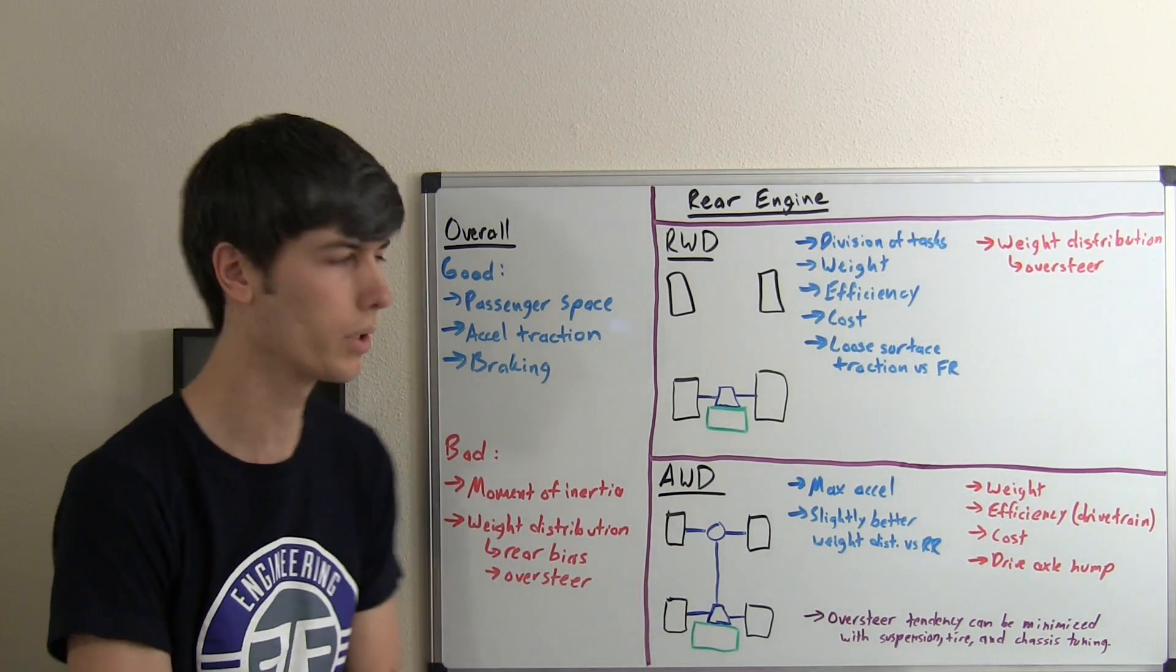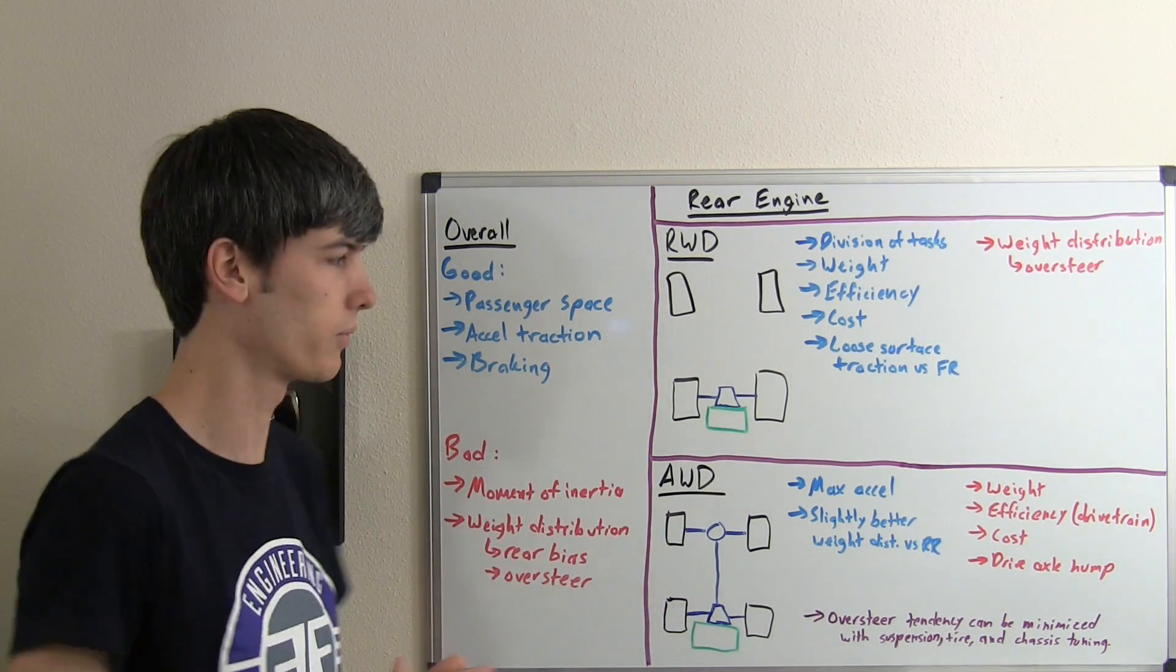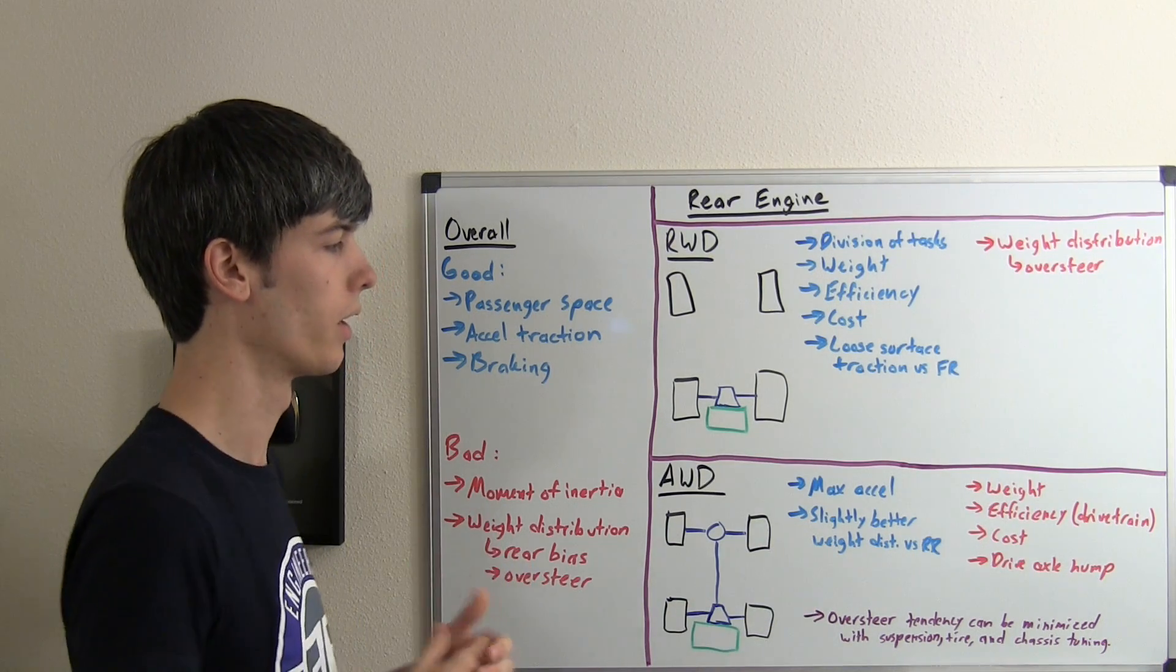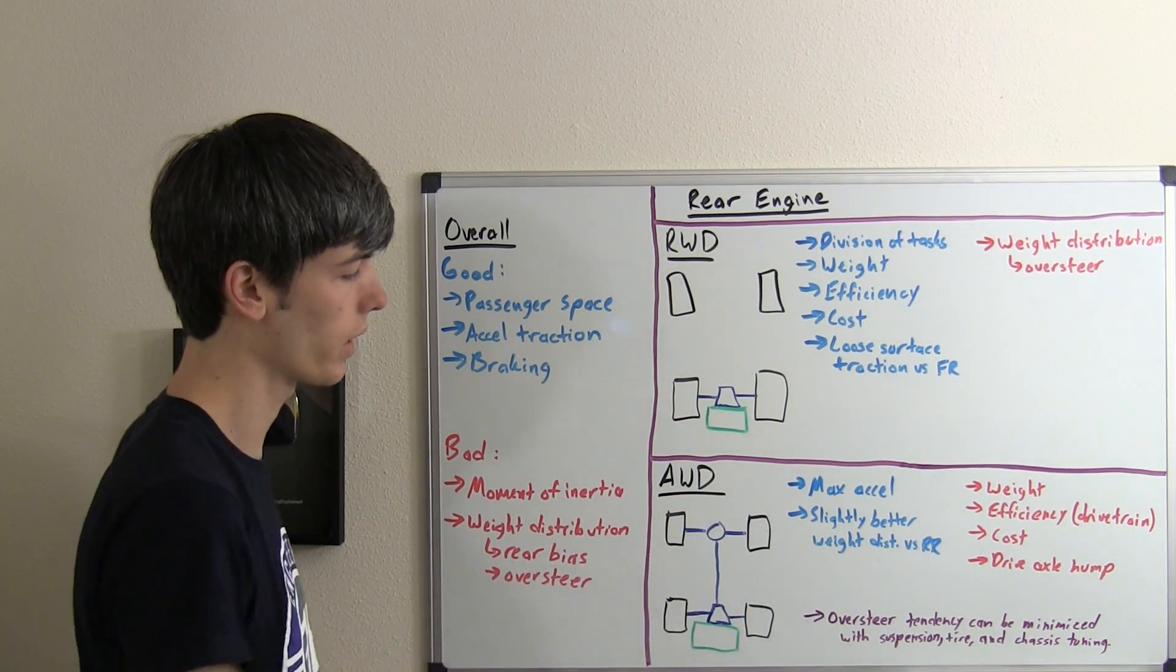Moving on to all-wheel drive. This is going to offer you the maximum amount of acceleration because you've got all your weight on top of driven wheels. And you're going to have a slightly better weight distribution versus rear-mounted engine with rear-wheel drive, because you've got the added weight towards the front.